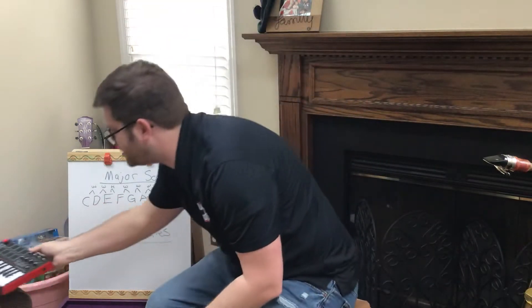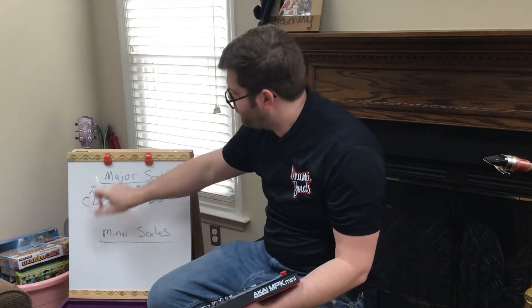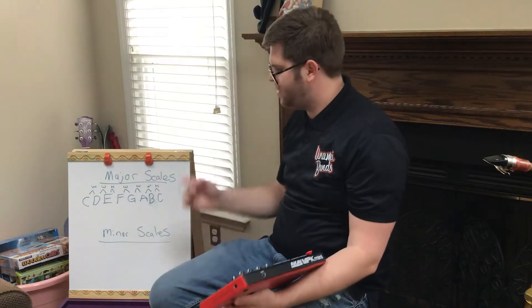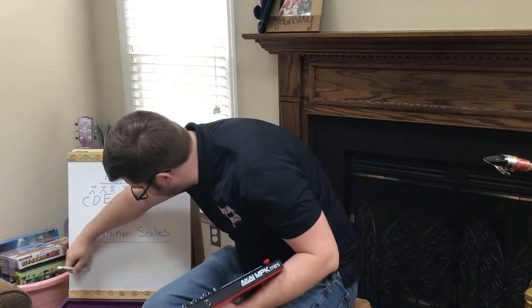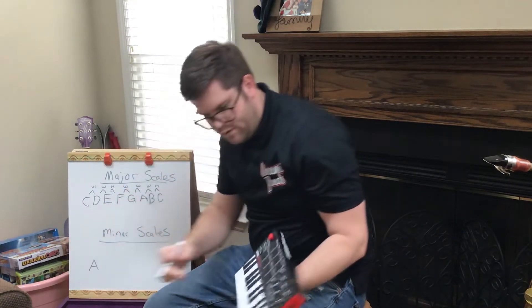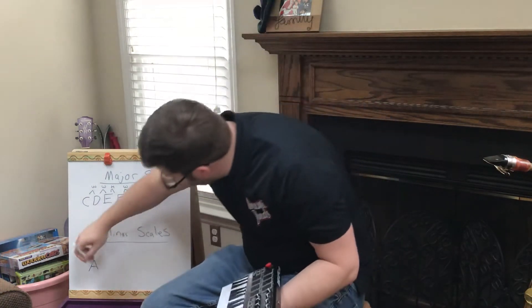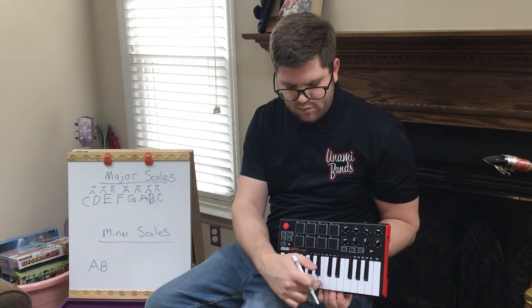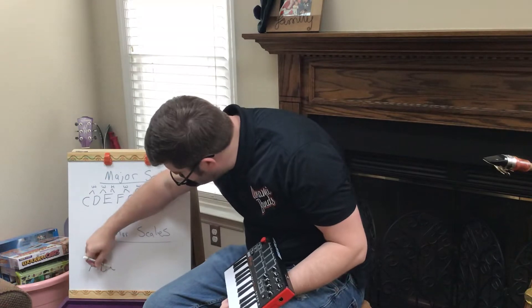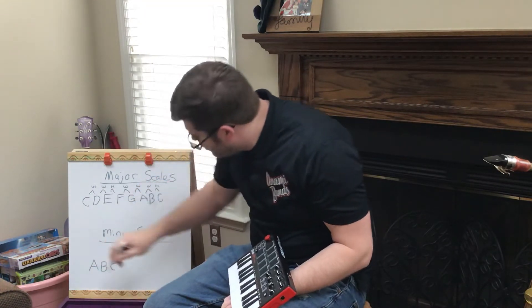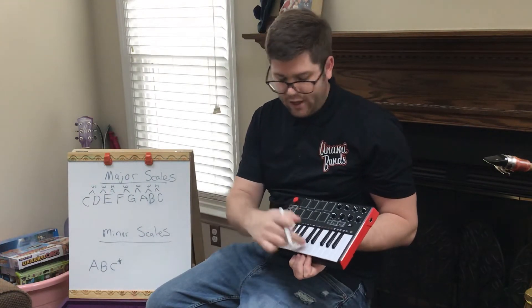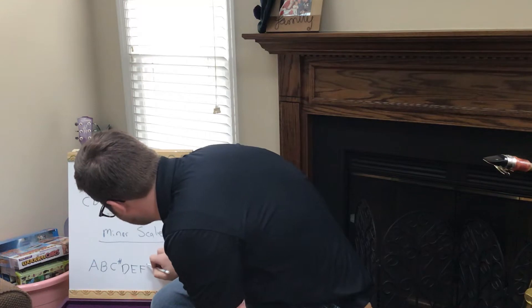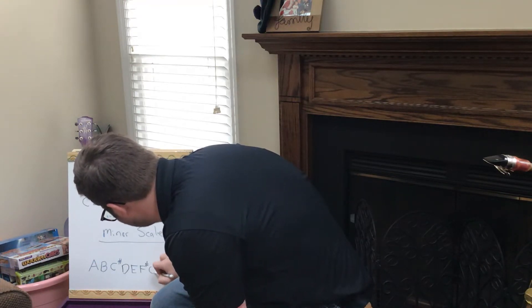That's the major scale formula: whole, whole, half, whole, whole, whole, half. We can apply this to any note. Starting on A: a whole step up is B, another whole step from B — we have to skip a white key — gives us C#. A half step above C# puts us at D.